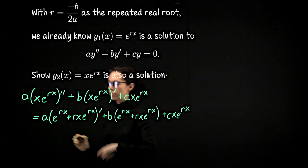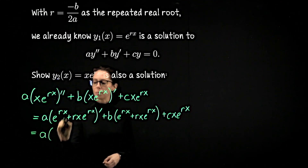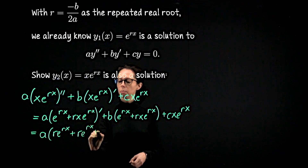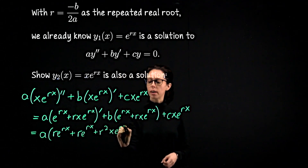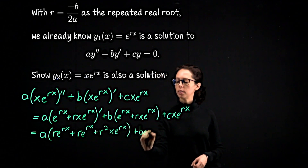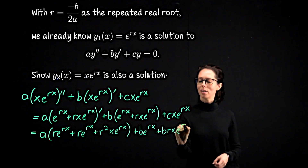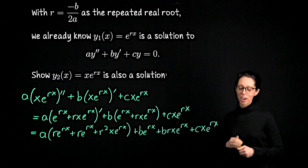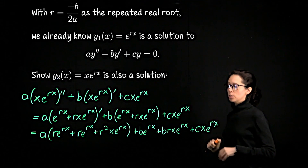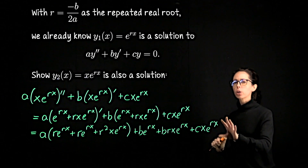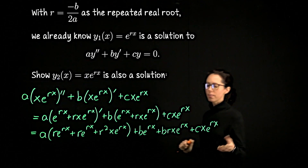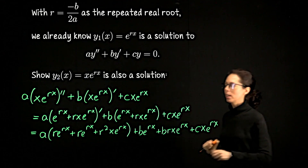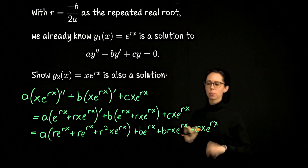After expanding, we get A(2Re^(Rx) + R²x·e^(Rx)) + Be^(Rx) + BRx·e^(Rx) + Cx·e^(Rx). Notice that e^(Rx) is common to every single term. Our goal is to show this simplifies all the way to zero, which would confirm that x·e^(Rx) is a solution to the homogeneous equation AY'' + BY' + CY = 0.